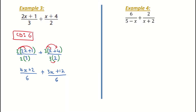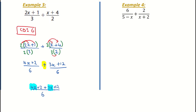Next I add my fractions — remember the denominator stays the same, it's over 6. I combine the tops: 4x plus 2 plus 3x plus 12, making this a single fraction. I group common terms: 4x and 3x together make 7x, and 2 and 12 together make plus 14. So the answer is 7x plus 14 over 6.